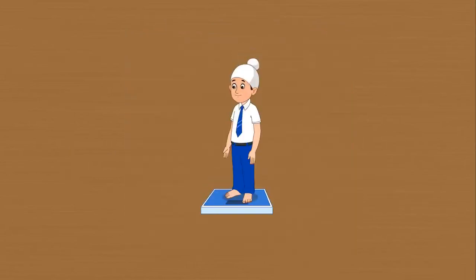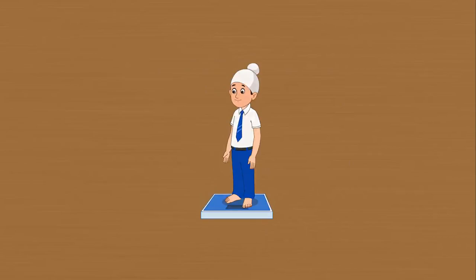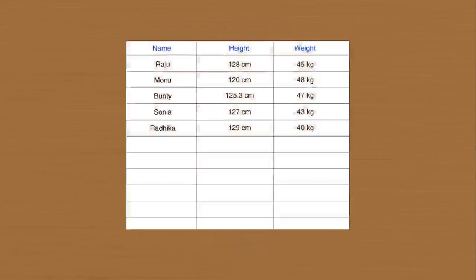Let each student stand on the weighing machine without shoes. Let other students note the weight from the scale of the machine. Record the heights and weights in the same chart against the name of the students.